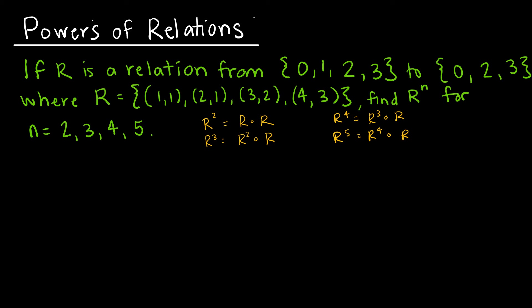So let's take a look. We have R², which we just did in the last example, so we're not going to go through that one again. We found it to be {(1,1), (2,1), (3,1), (4,2)}.